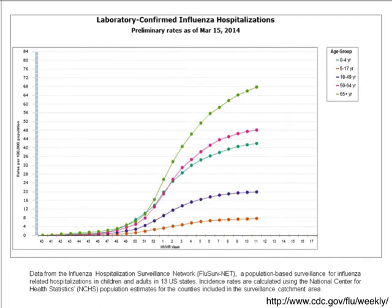This graph shows laboratory-confirmed hospitalizations — people sick enough to go to hospital. This is the past flu season starting at week 52 of 2012. At the beginning of the year it starts to go up very high. The higher peaks are the very old and very young: 65+ years of age, 50 to 64, and 0 to 4 years of age all tend to go to hospital a lot for influenza. Younger people — your age — are much less represented.